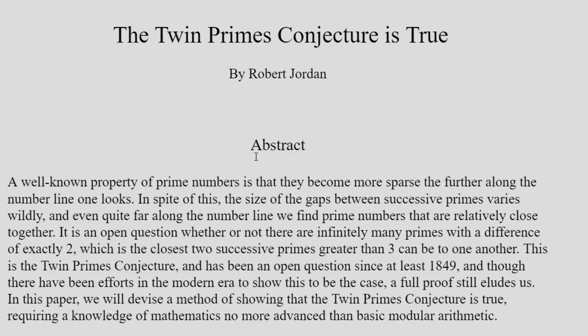For those of you who are not familiar with the Twin Primes Conjecture, it is a hypothesis in mathematics which says that there are infinitely many twin primes—that is, consecutive primes which are two apart from one another. So 3 and 5, 5 and 7, so on and so forth.